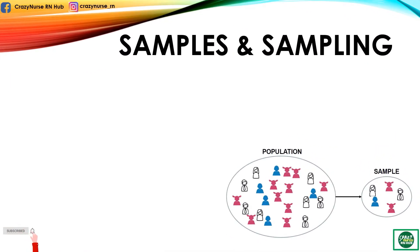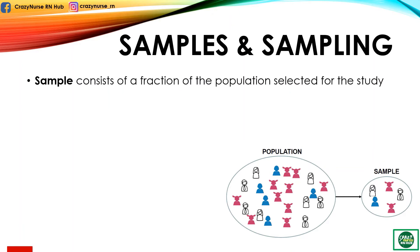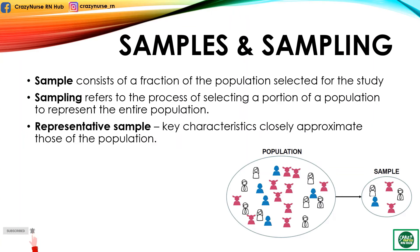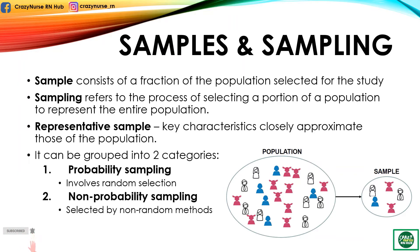Now let's proceed to samples and sampling. Sample consists of a fraction of the population selected for the study. On the other hand, sampling means the process of selecting a portion of a population to represent the entire population. A representative sample has key characteristics that closely approximate those of the population. Sampling scheme or process can be grouped into two categories: probability sampling, which involves random selection, and non-probability sampling, where elements are selected by non-random methods.